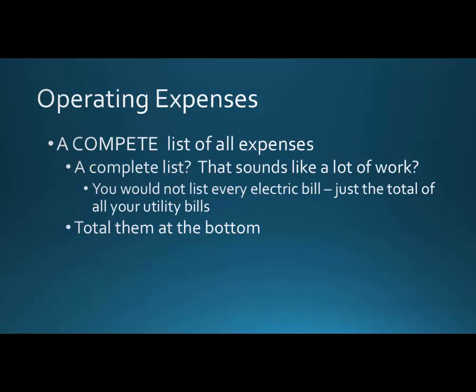The next block is a complete list of our operating expenses. We're not literally listing every individual expense — those are in the general ledger. Here we're picking out the totals from all the various categories. For example, we won't list every electric bill; we'll just have a utility expense line with the total amount spent on electricity, phone, and so on. We list a category, put in the dollars for that category, and add them all up at the bottom.